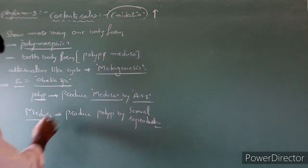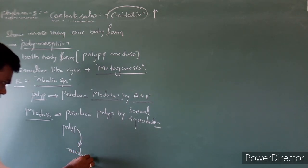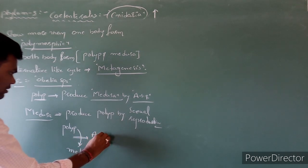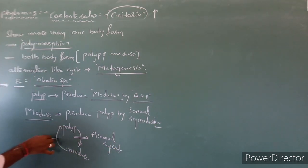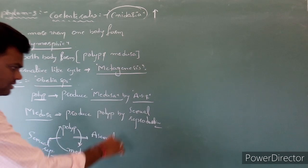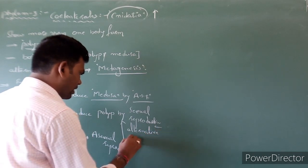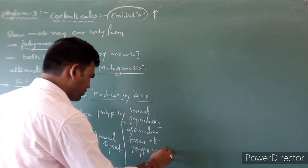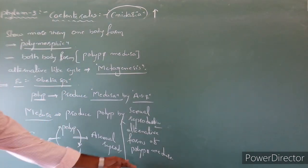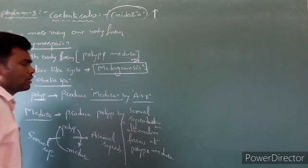So polyp to medusa is through asexual reproduction, and medusa produces polyp by sexual reproduction. This is an alternative alternation of polyp and medusa. Such a phenomenon is called metagenesis — a very important special unique character of cnidaria members.